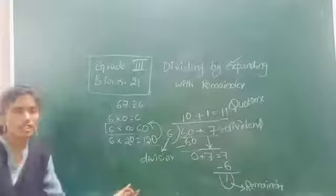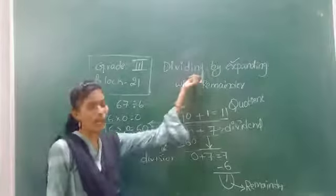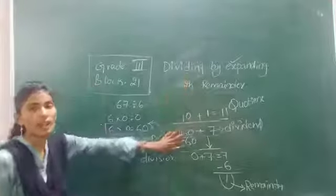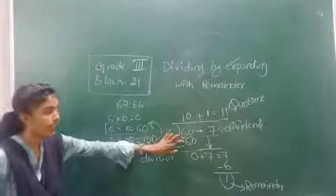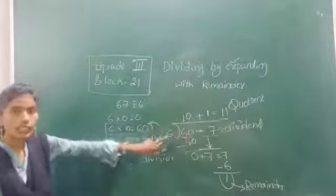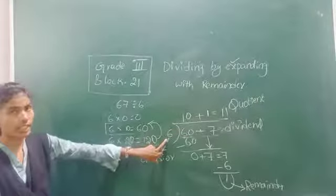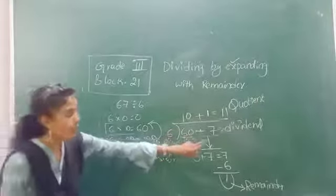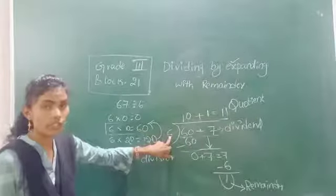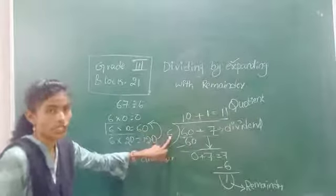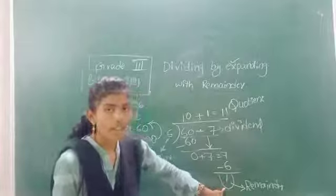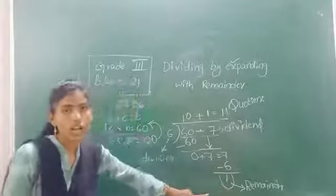So this is the process you have to use for the expansion method. First, you need to expand the dividend. Then you have to read the 10-times table of the given divisor. And then you have to use the normal table of the given divisor. The number which is left after dividing is called the remainder.